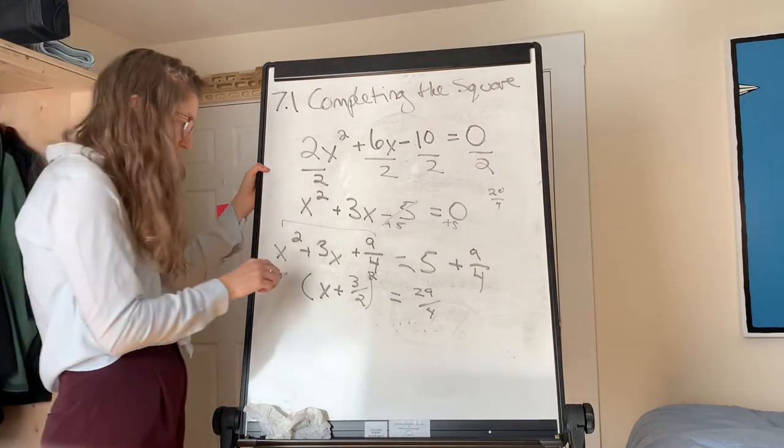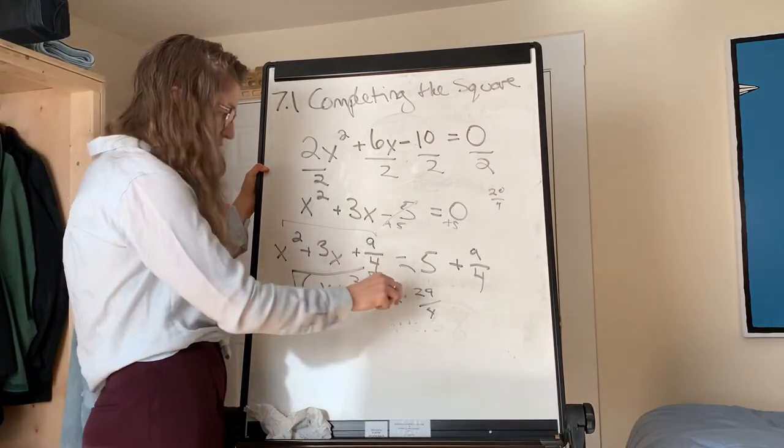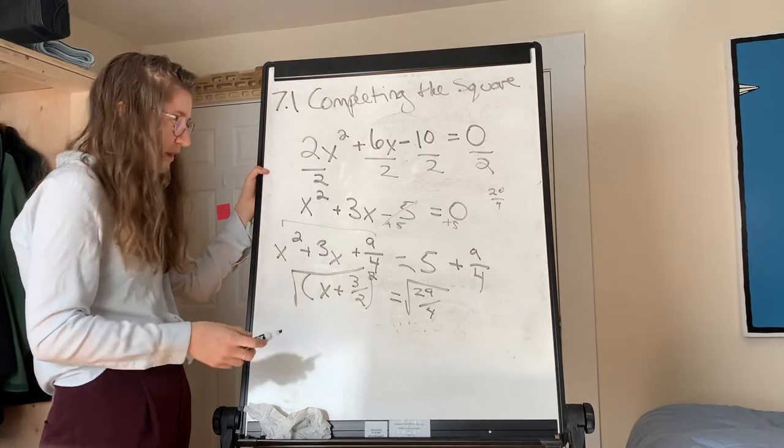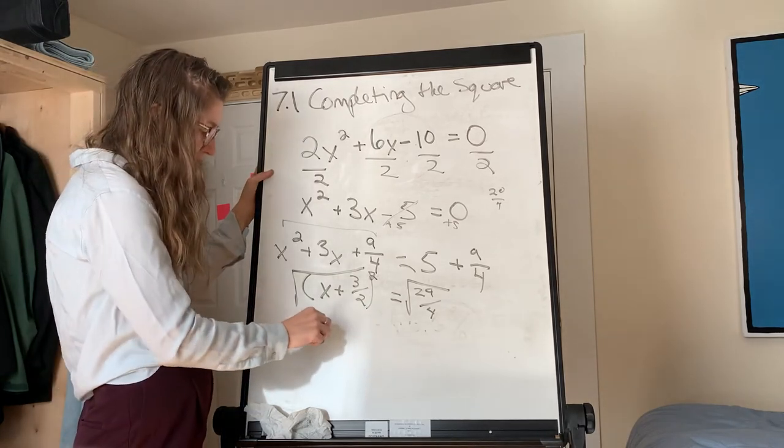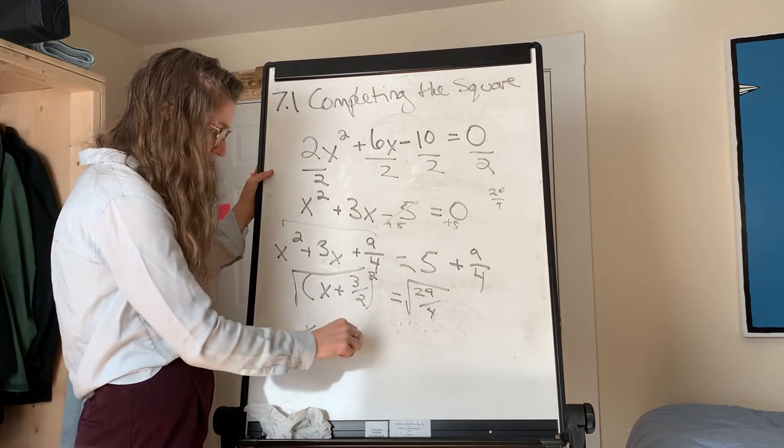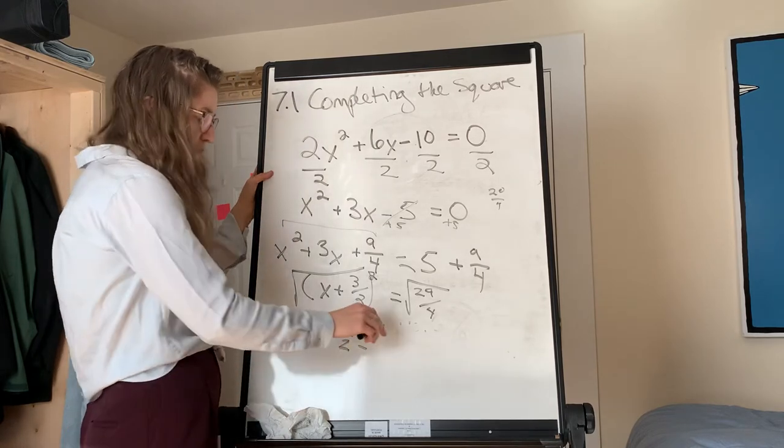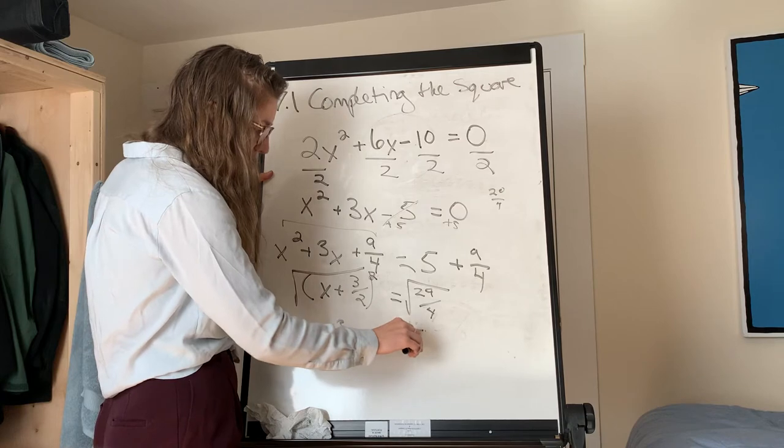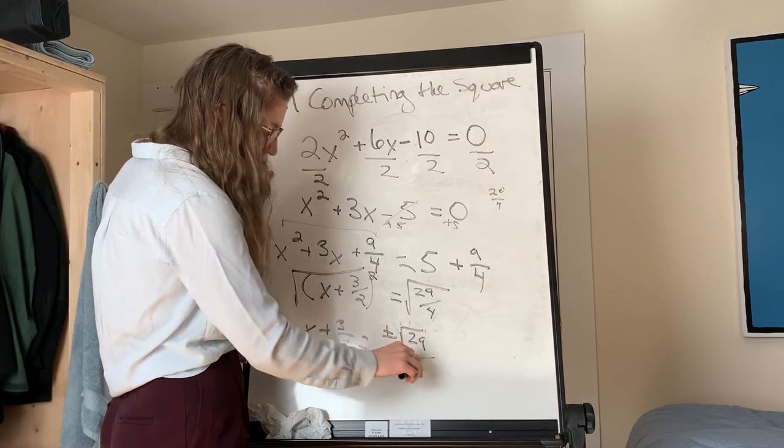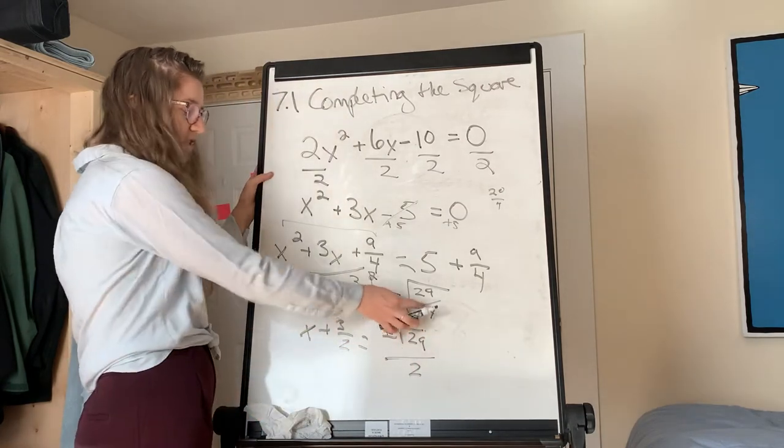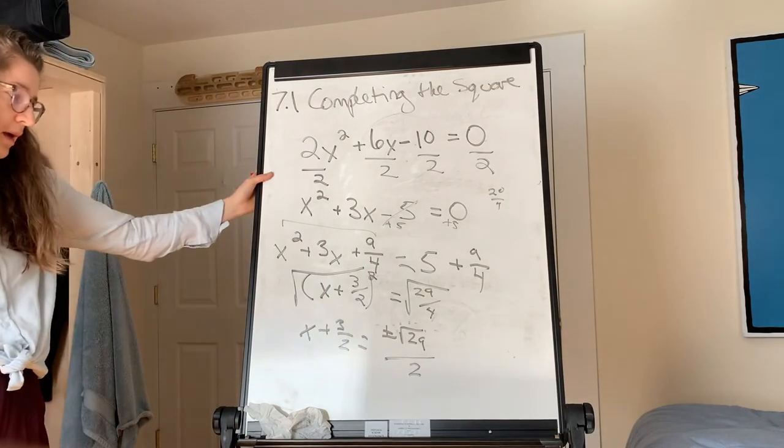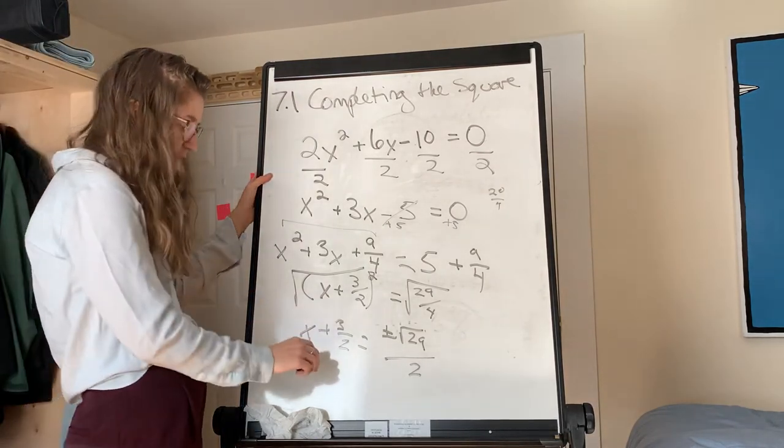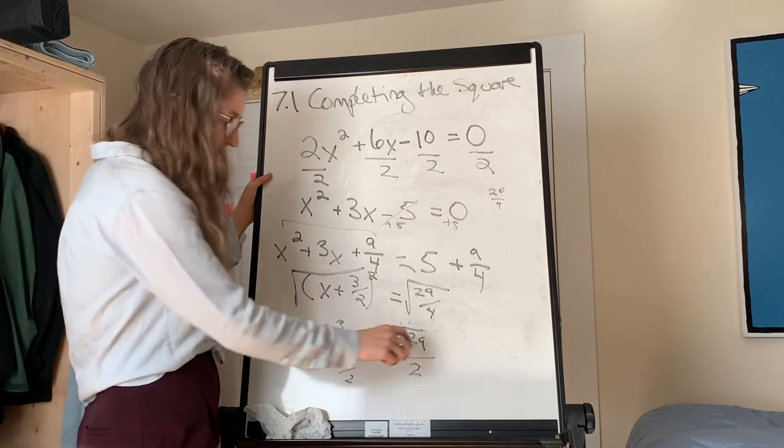Now we're going to take the square root of both sides. Square root, square root. Because remember, we're trying to get x by itself. So then we have x plus 3 over 2 is equal to plus or minus the square root of 29. And I'm going to write it over 2 because I did the square root of 4. And that's going to just be a little bit easier when we do our next step, which is subtracting 3 halves from both sides.